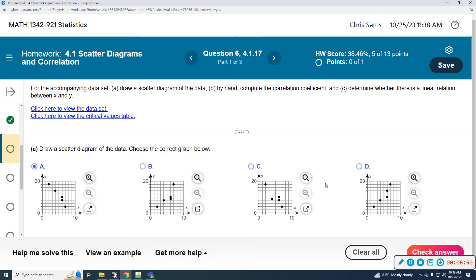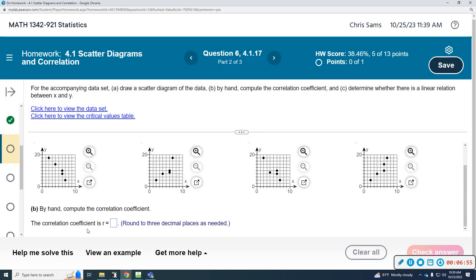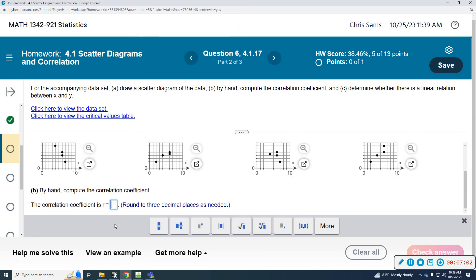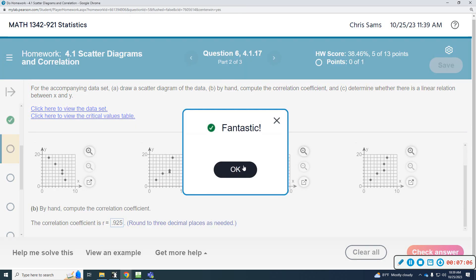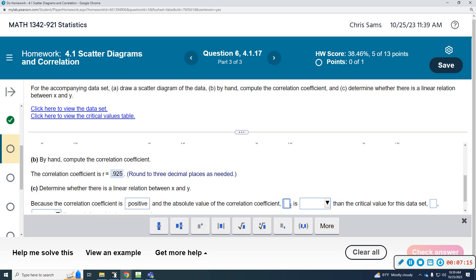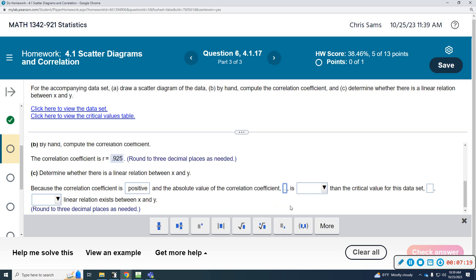Okay, so based on all that, we have the scatter plot, it's going to be D. The correlation coefficient rounded to three decimal places, I had that compute 0.925.